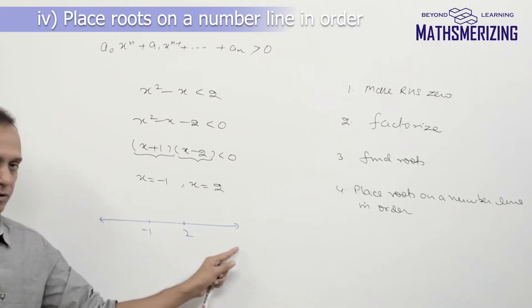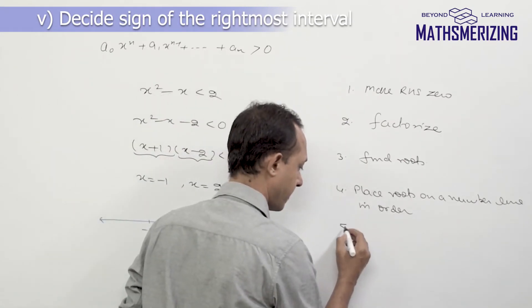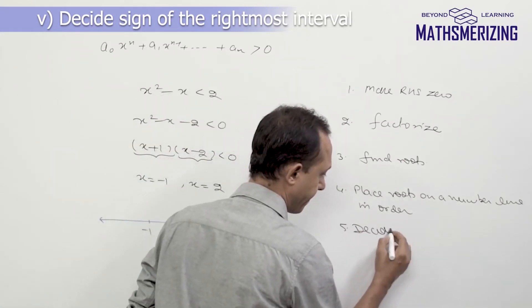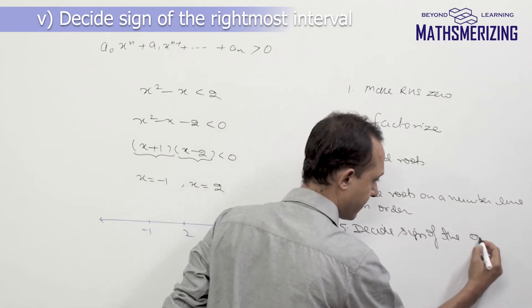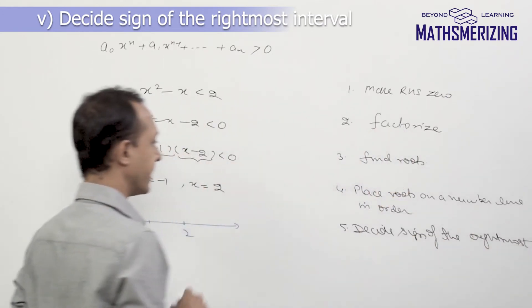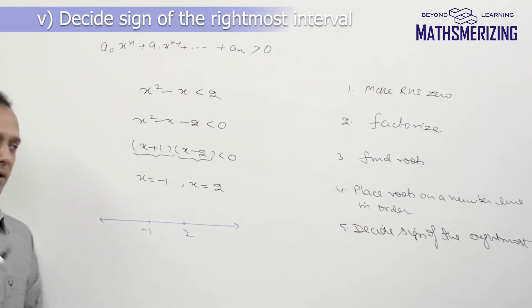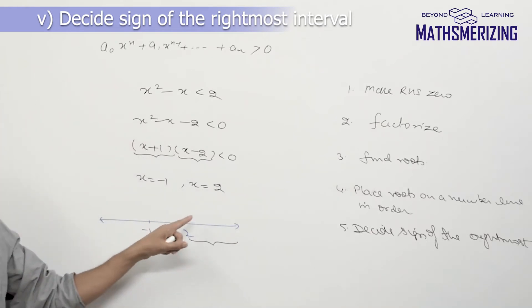Now the fifth step is decide sign of the rightmost interval. The convention that I follow is I'll need to decide the sign of this rightmost interval. So the rightmost interval is from 2 to infinity. So I'll need to know whether to put a plus sign or a minus sign here. Now how do we decide whether to put a plus sign or a minus sign?